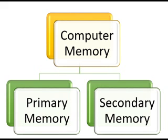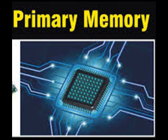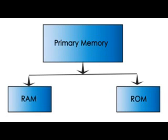Computer memories are of two types: primary memory and secondary memory. The first type is primary memory. It is also known as internal memory or main memory. It stores the data and instructions needed for processing. Primary memory directly communicates with the CPU. Primary memory has two types: RAM and ROM.